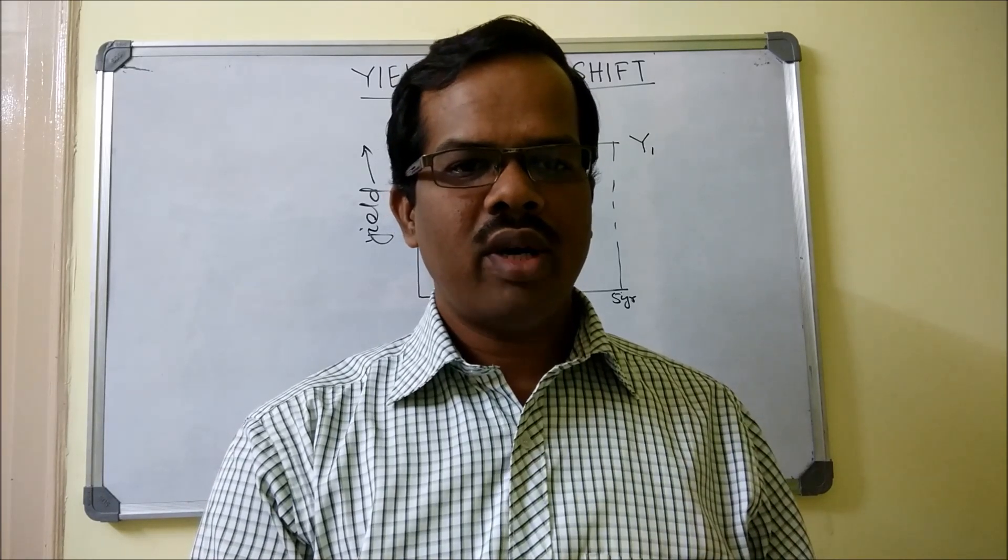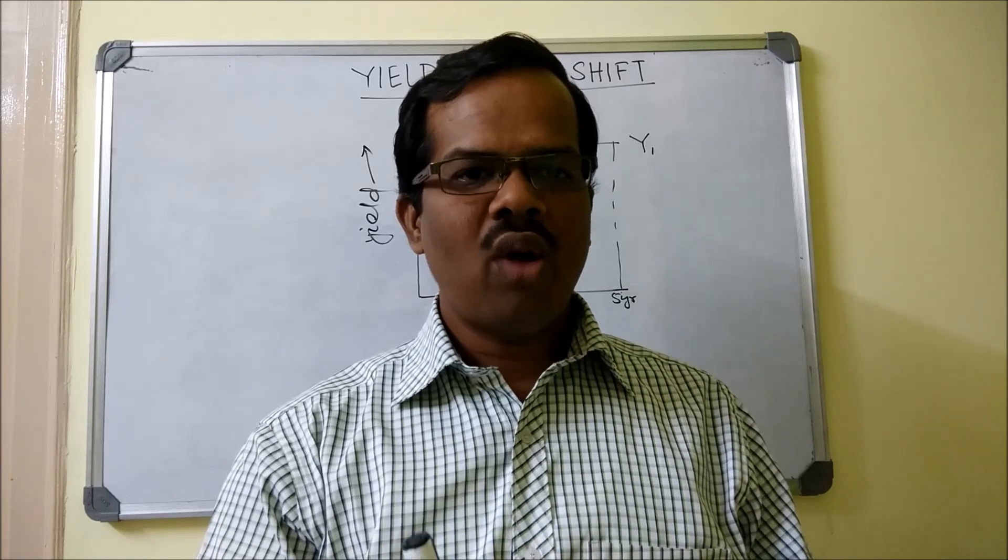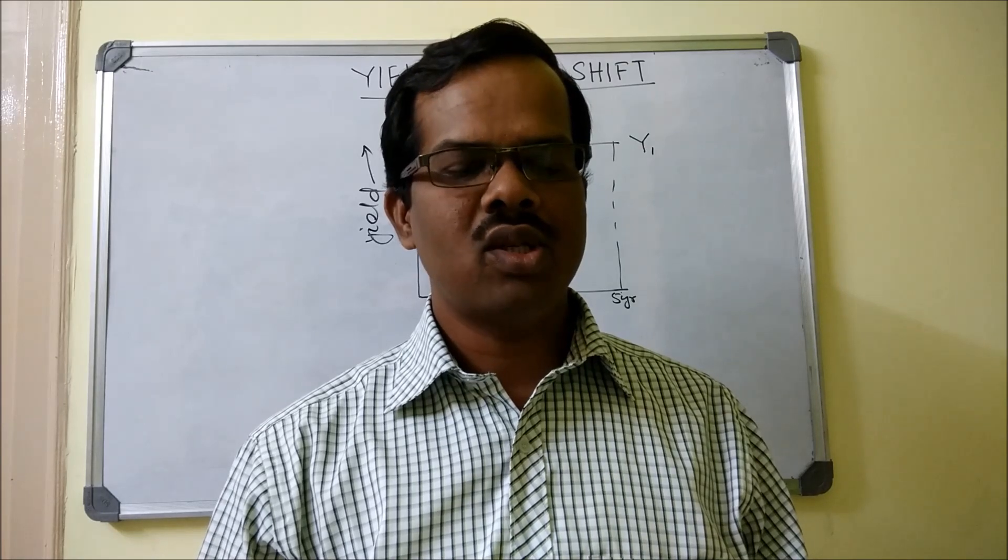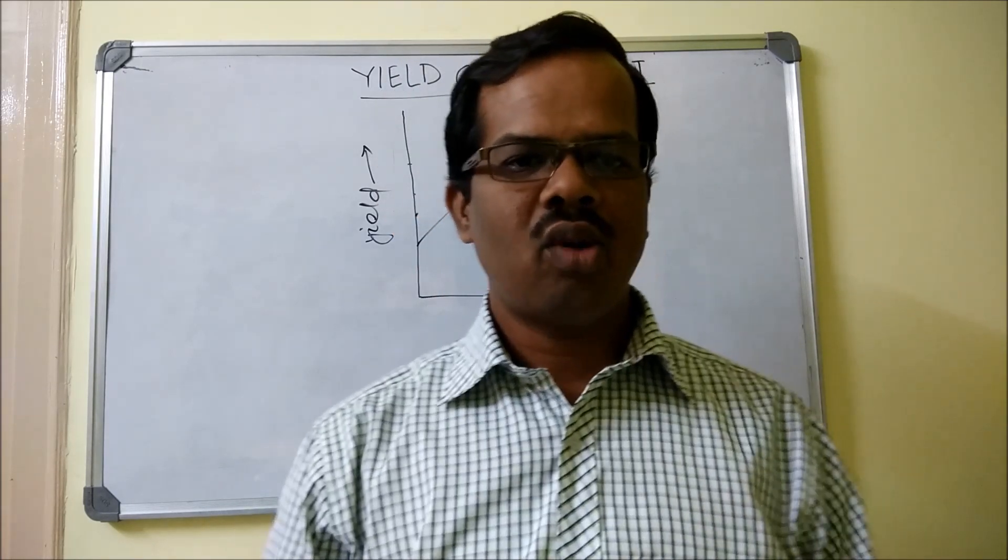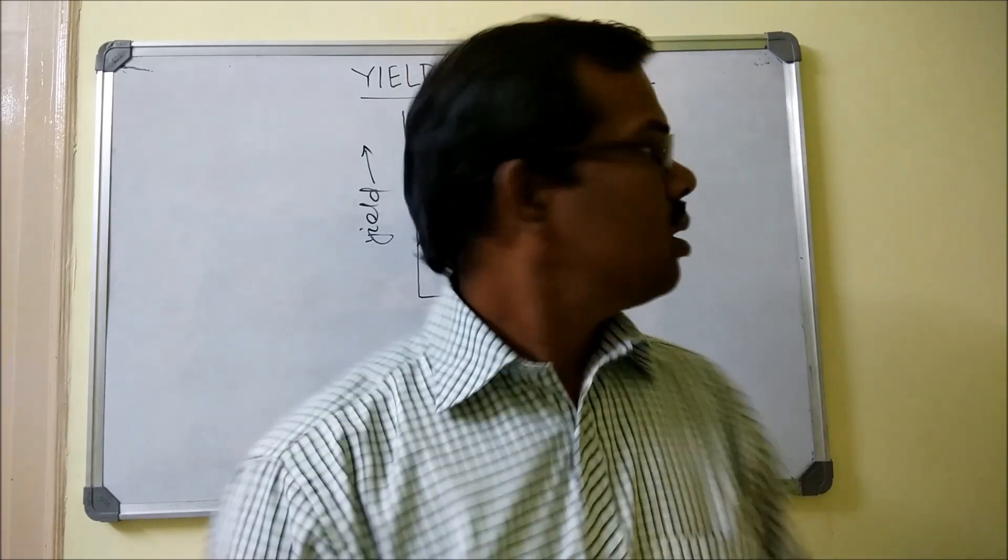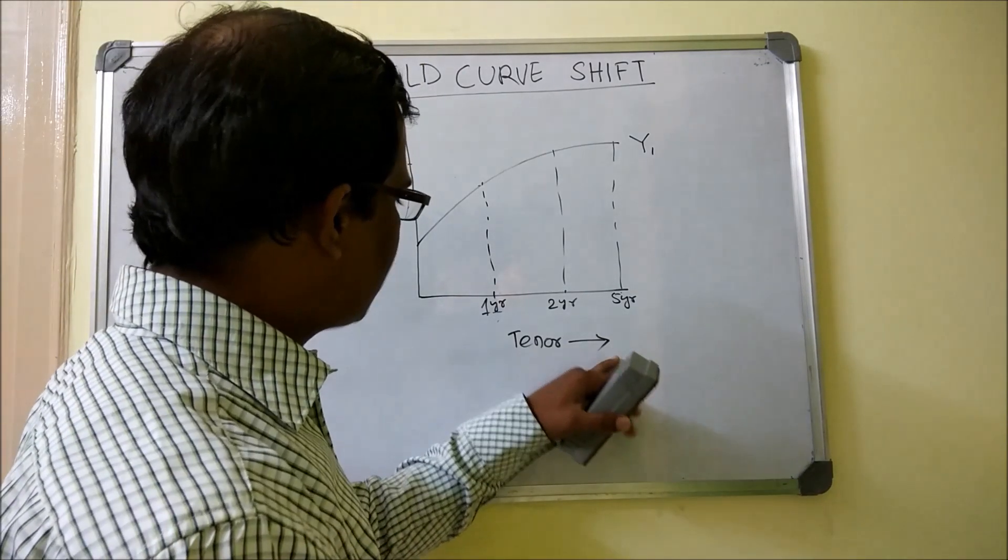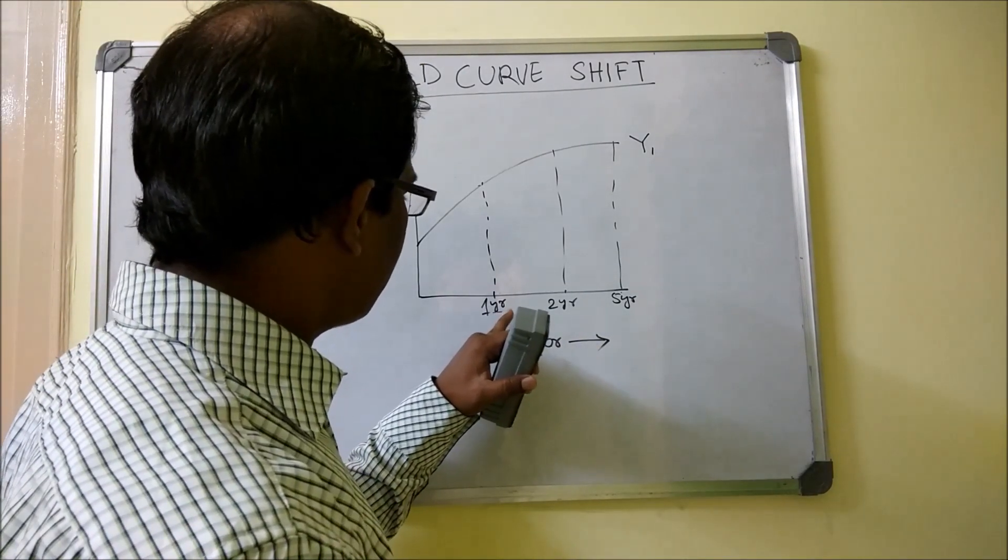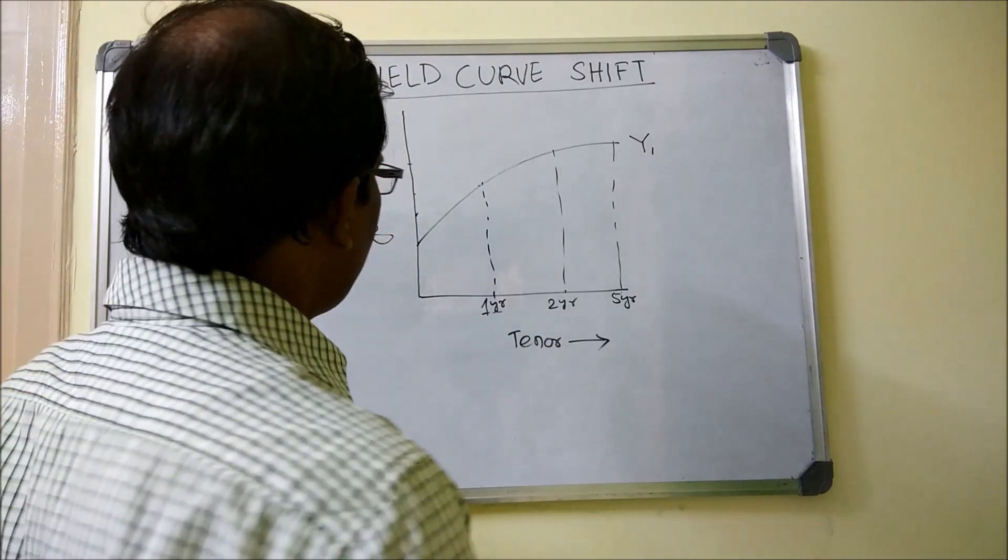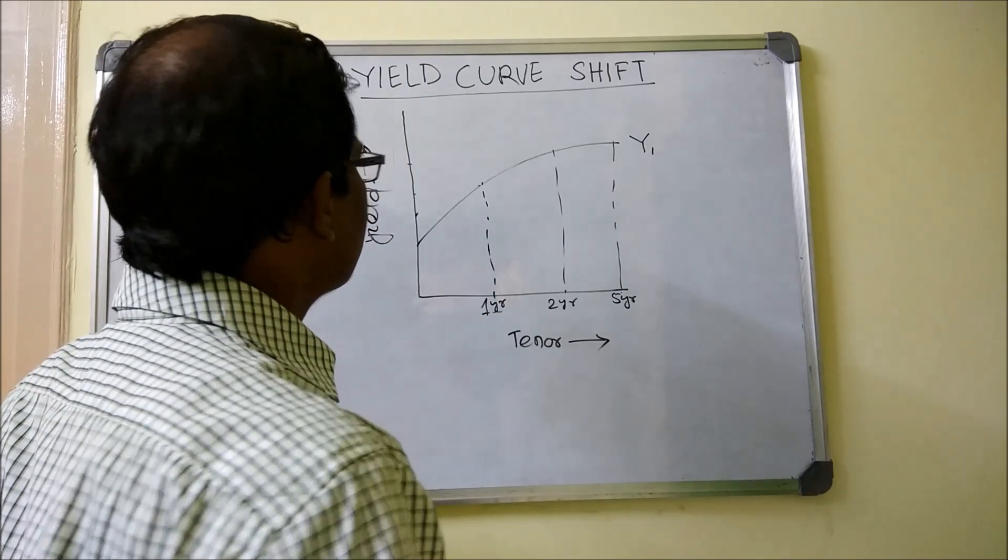We know already what is a yield curve - it is a plot between the yield and the time series or the tenor series. I have drawn a diagram which represents the typical yield curve. You can see that the yield is in y-axis and the tenor is in x-axis. I have represented one year, two year, five years tenors for simplicity purpose, and I have plotted one graph that is known as yield curve.